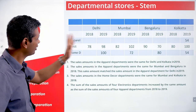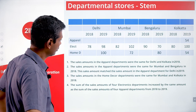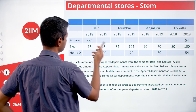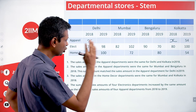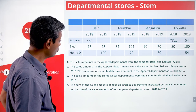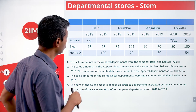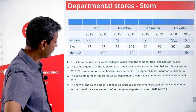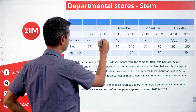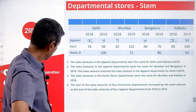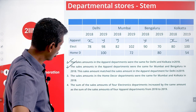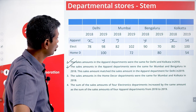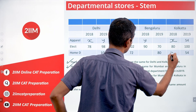Let's go step by step. The sales amounts in the apparel department were the same for Delhi and Kolkata in 2018 — so this is x and this is x. Sales amounts in the apparel department were the same for Mumbai and Bengaluru in 2018 — call that y. This sales amount also matched the sales amount in the apparel department for Delhi in 2019, so Delhi 2019 apparel is also y. We put in two variables. The sales amounts in the home decor department were the same for Mumbai and Kolkata in 2018 — so that's z and z.